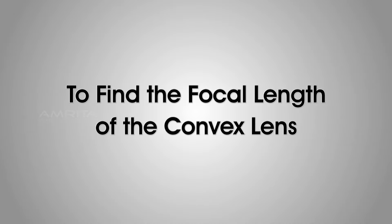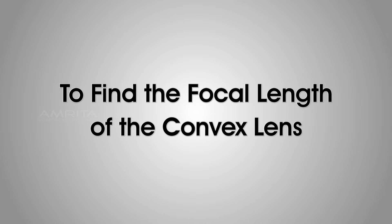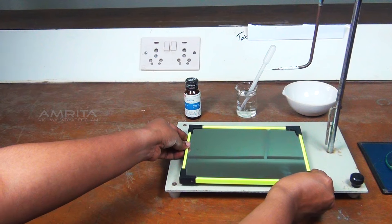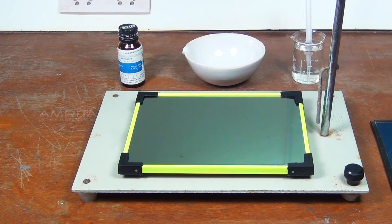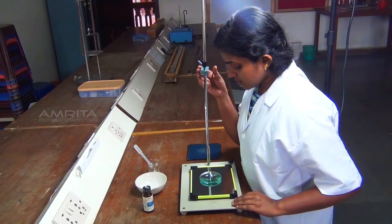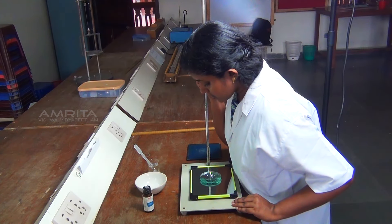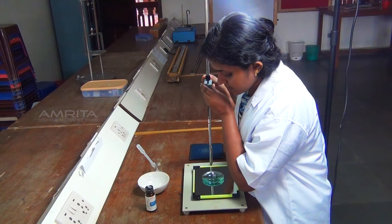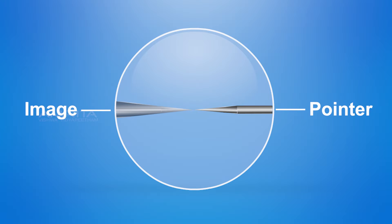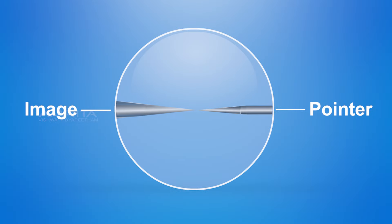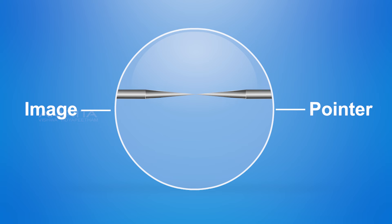Procedure — To find the focal length of the convex lens: The plane mirror is placed horizontally on the base of the retort stand with its reflecting surface upwards. The given convex lens is placed over the plane mirror. The pointer is arranged horizontally on the clamp of the retort stand, vertically above the lens. Looking from above, the height of the pointer is adjusted such that the inverted image of the pointer is obtained. The height is further adjusted so that the image coincides with the tip of the pointer without parallax.